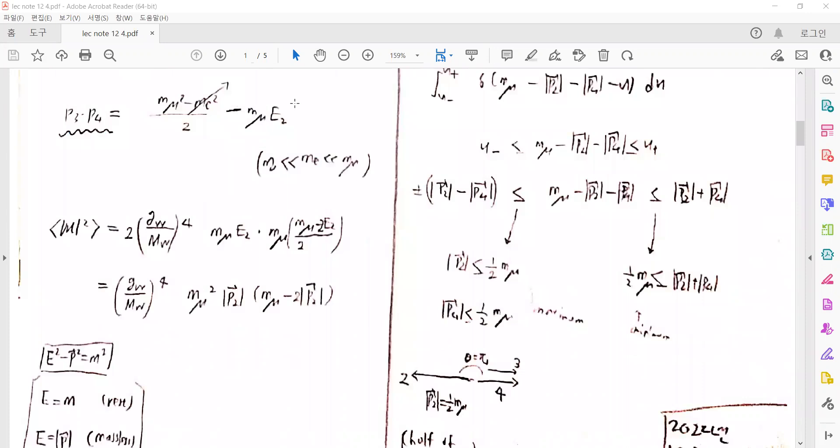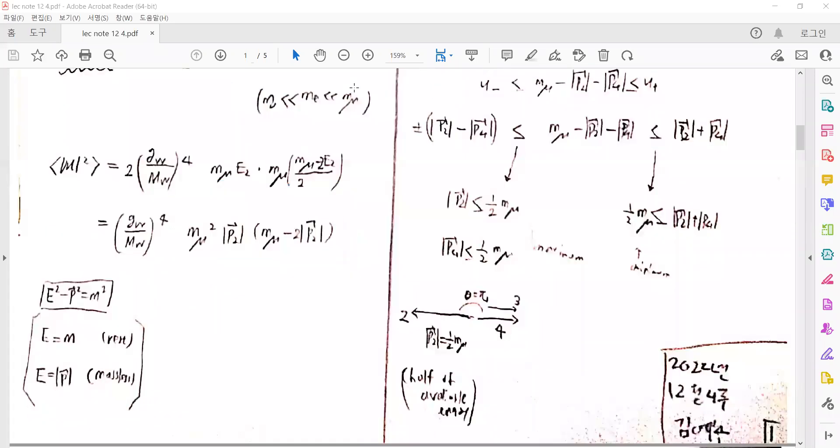If we work out all the products of momenta, it can be written like that. There is some algebra here. Notice that the neutrino masses are negligible, and also the electron mass is negligible compared with the muon mass.